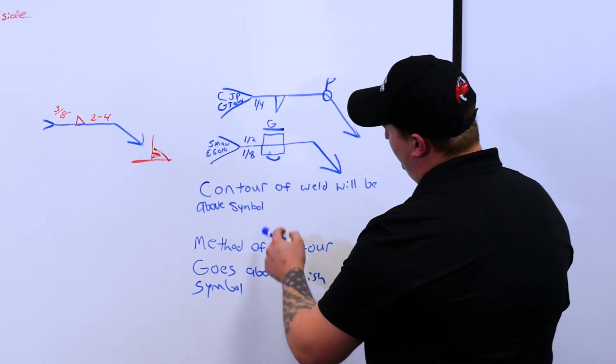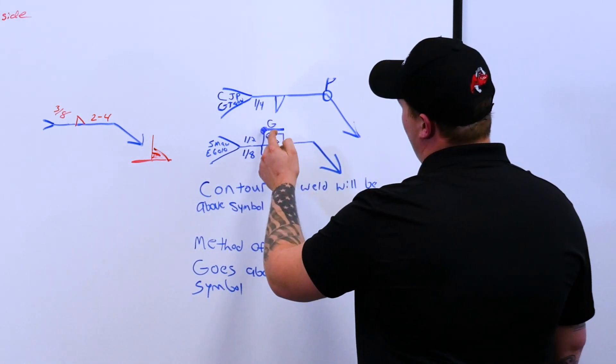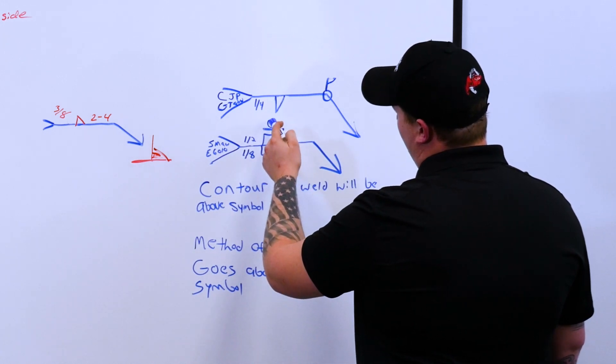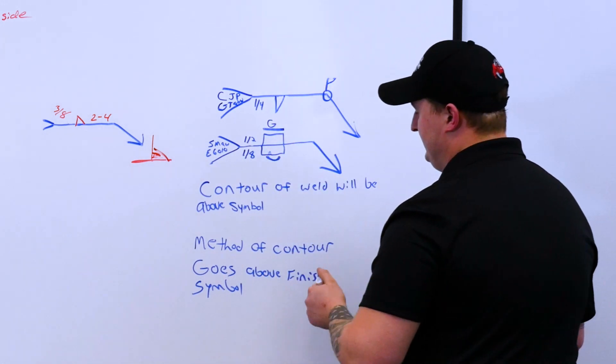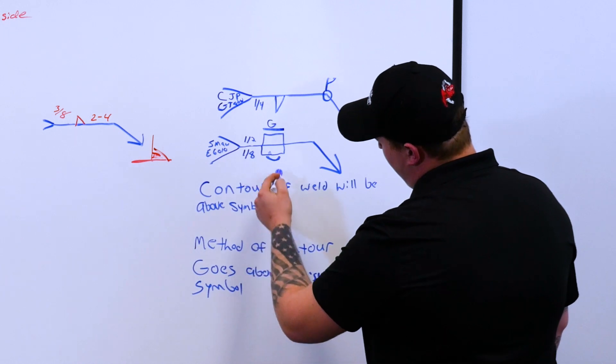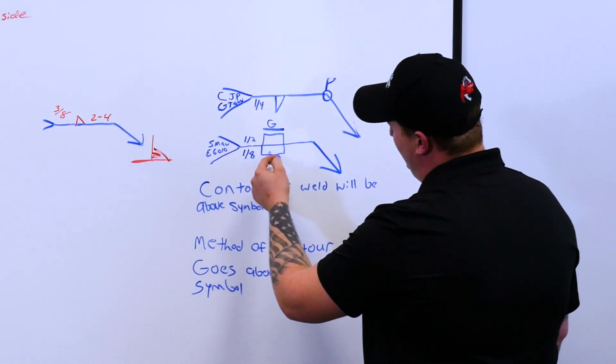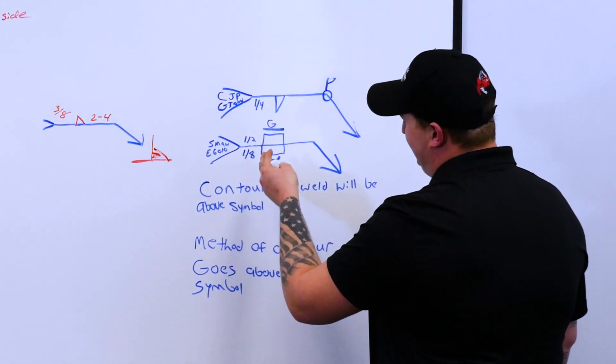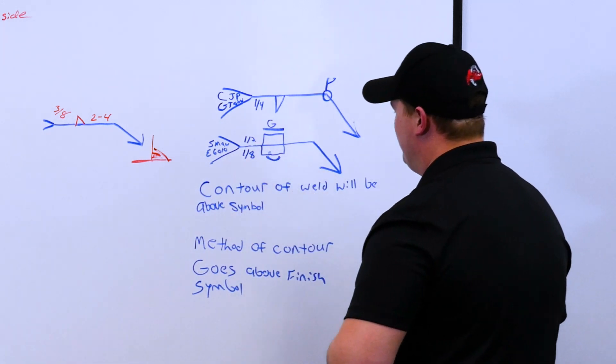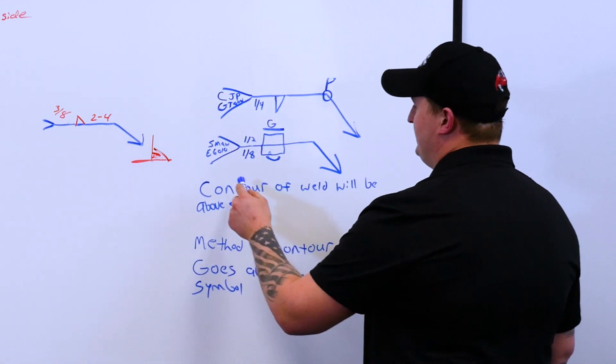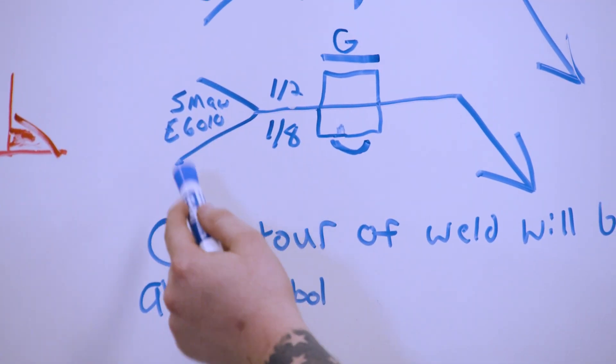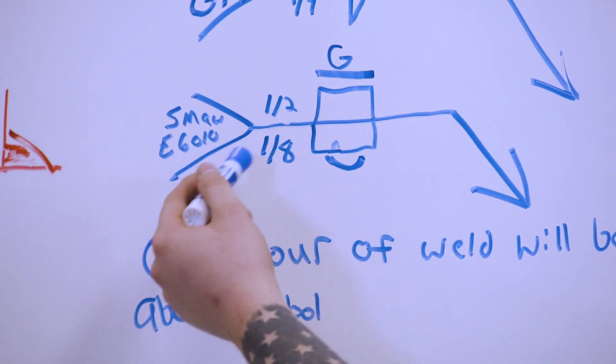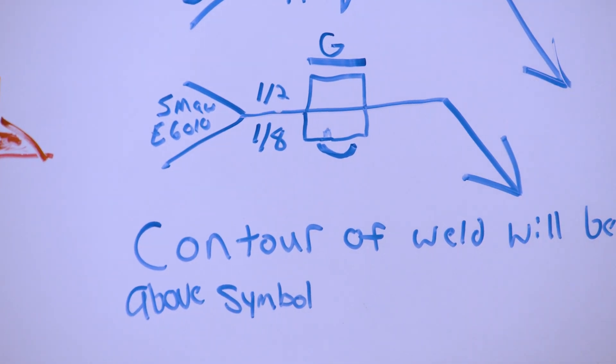The method of contour goes above the finish. So here we would have a flat or flush contour to be achieved by grinding. So, again, the symbol being below it on the arrow side, we now have a convex symbol, which would be like an upside down rainbow or U. And then in our tail bracket, we have shielded metal arc welding, so stick, and it's to be completed by 60-10 process.